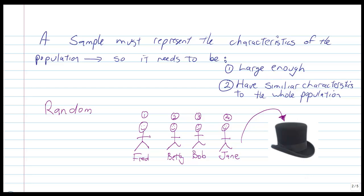So the sample needs to be large enough and have similar characteristics to the whole population. Notice it's not exactly the same characteristics to the whole population but similar so when you draw your conclusions it's reflective of what the population has or is about.